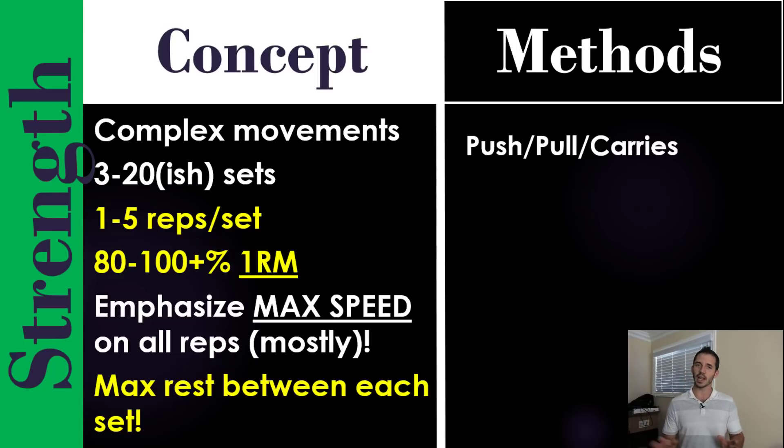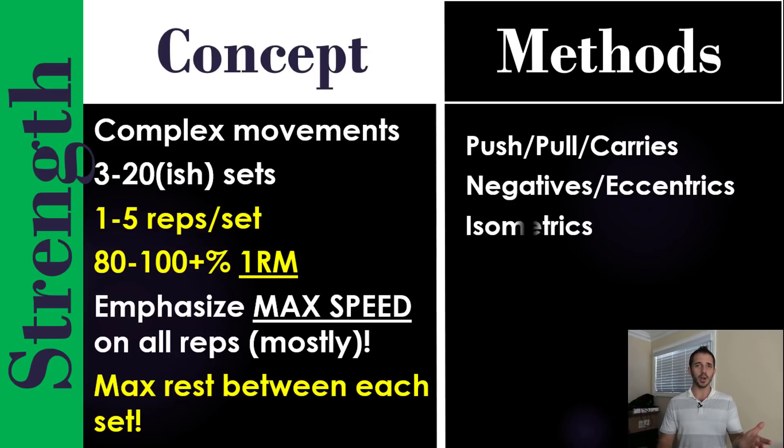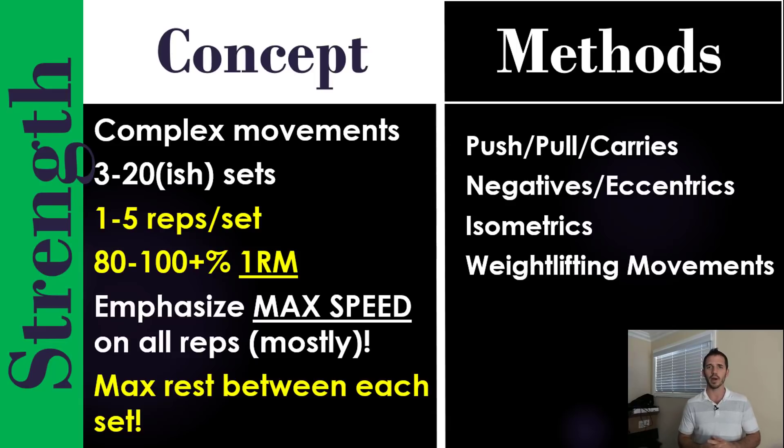In terms of the methods, you got a lot of options here. Push, pulls, carries, your classic hinges, presses, squats, all that stuff is very, very good for general strength. But don't forget the negatives and the eccentric work, very good too. Really slow controlled stuff is highly effective for strength. Be careful of the DOMS though with eccentric. Isometrics are also very good. Let's not forget these things, particularly for the connective tissue and the joints. I'd recommend checking out Cal Dietz and his triphasic system for this. He's got a very good approach to integrating those three movement patterns.